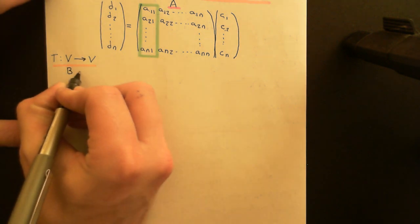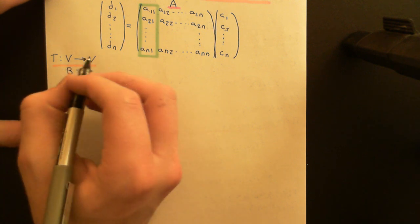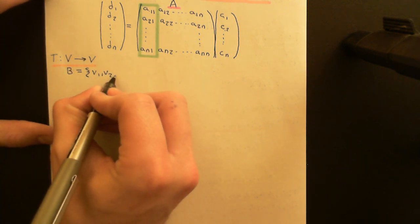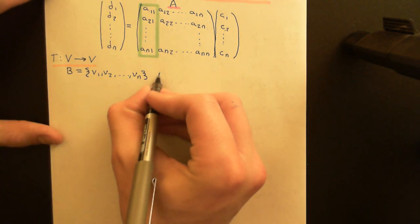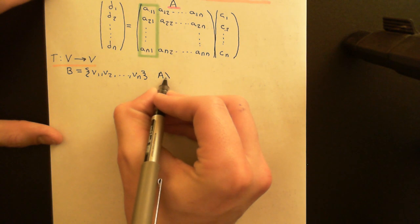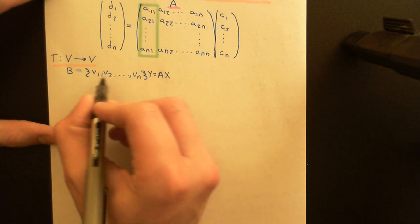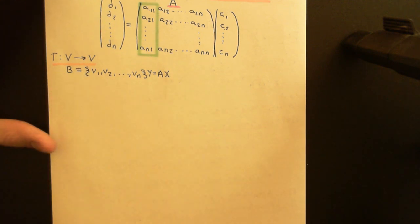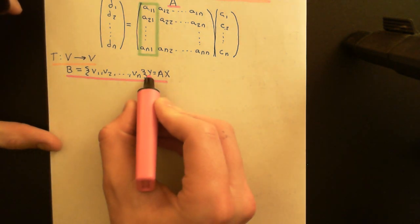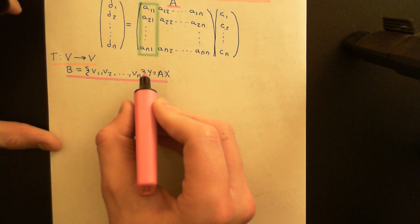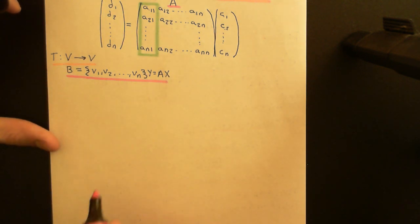We have this first basis B, consisting of vectors V1, V2, all the way up to Vn, which we use to give all vectors in the vector space coordinates. We have the matrix A, which can take a coordinate vector with respect to this basis from the domain vector space and turn it into a coordinate vector with respect to this basis in the codomain vector space.